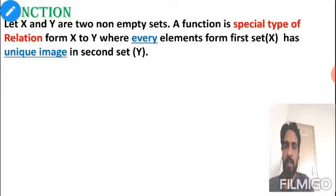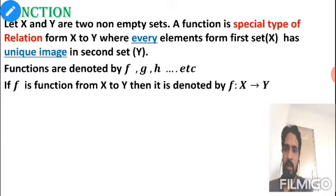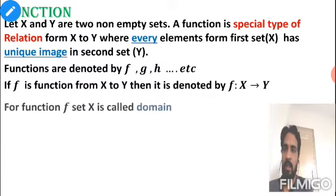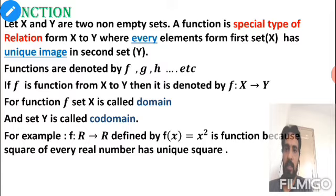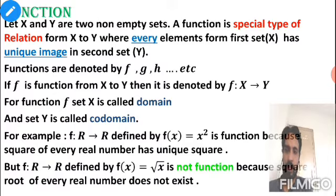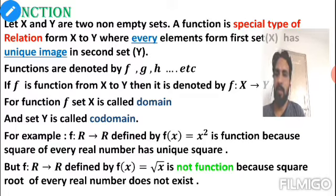In a function, every element from the first set has a unique image in the second set Y. Functions are denoted by small letters f, g, h. If a function is from X to Y, we write it as f: X → Y. For function f, set X is the domain and Y is the co-domain. X² is a function because every real number has a unique square — one child, one mother concept — but √x is not a function because the square root of negative numbers doesn't exist, and √4 gives both 2 and −2, violating the one-to-many rule.